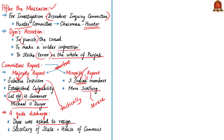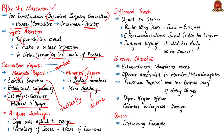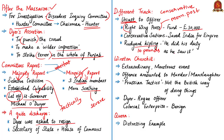The decision of letting off Dyer without punishment was approved by the British Secretary of State Edwin Montagu and the House of Commons. However, conservative lords rebuked the government for being unjust to Dyer, believing he had saved India for the British Empire. The right-wing press, The Morning Post, started a fund for Dyer, collecting 30,000 pounds. Rudyard Kipling, who had contributed 10 pounds to the fund, sent a wreath to Dyer's funeral in 1927 with the comment: 'He did his duty as he saw it.'